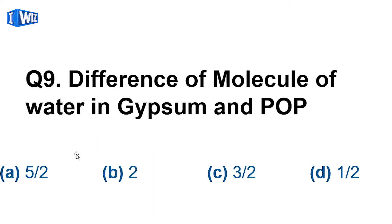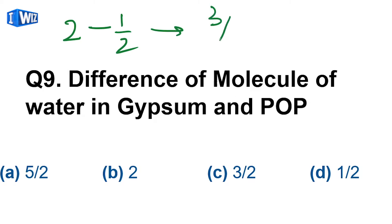Question number 9: difference in the number of water molecules in gypsum and plaster of paris (POP). Gypsum has 2 water molecules and POP has half a water molecule. So the difference is 2 minus 0.5 = 3/2. The answer is option C.